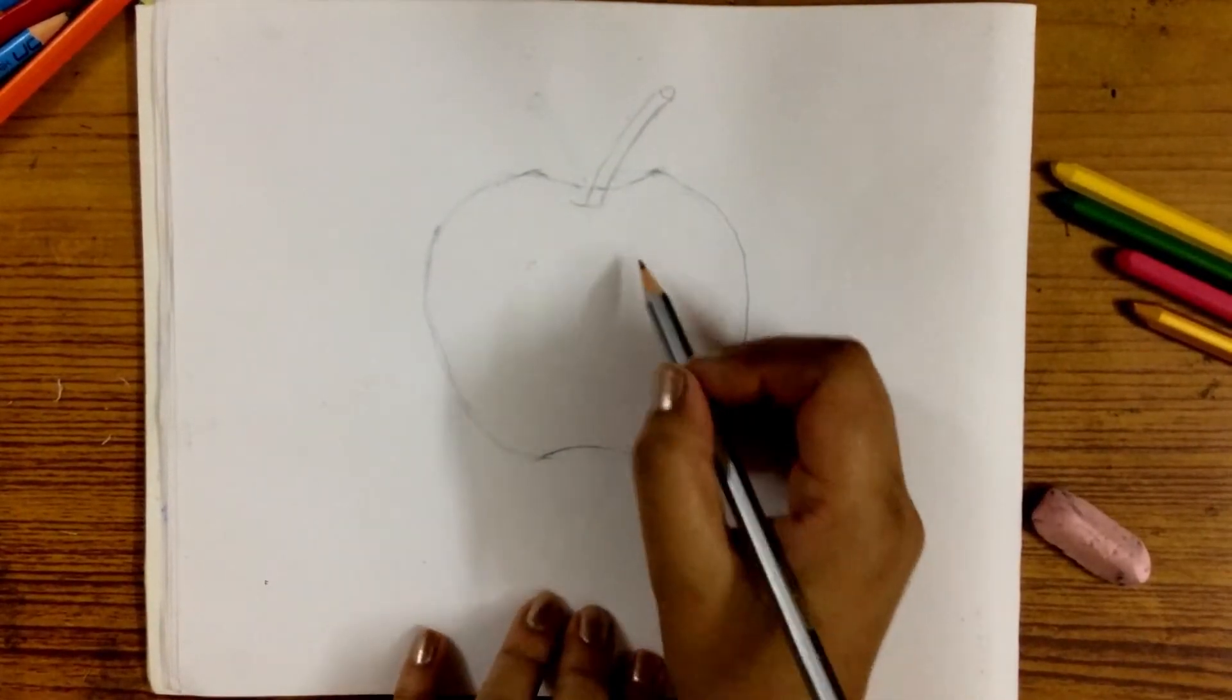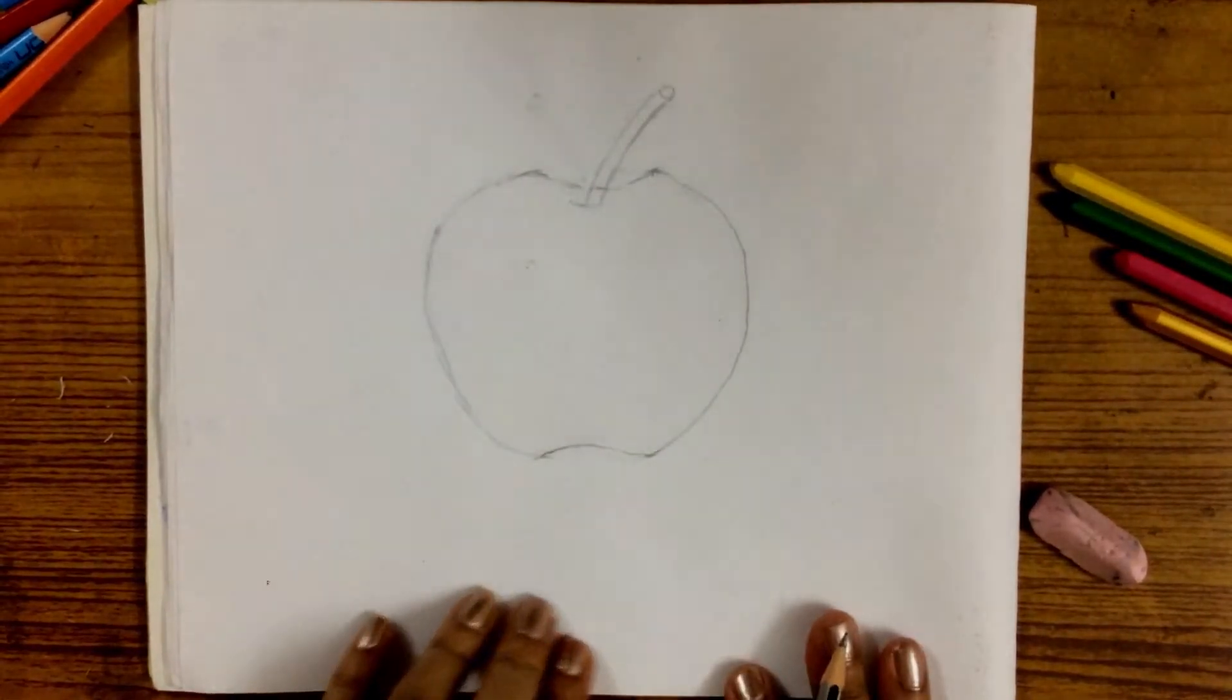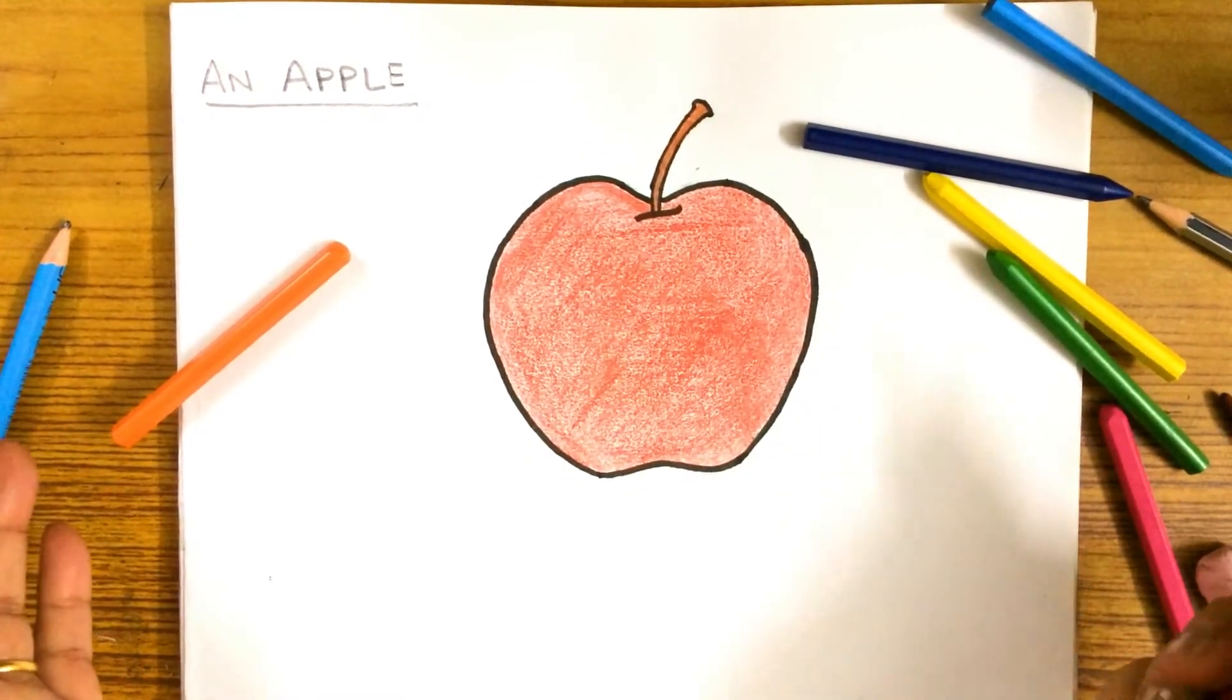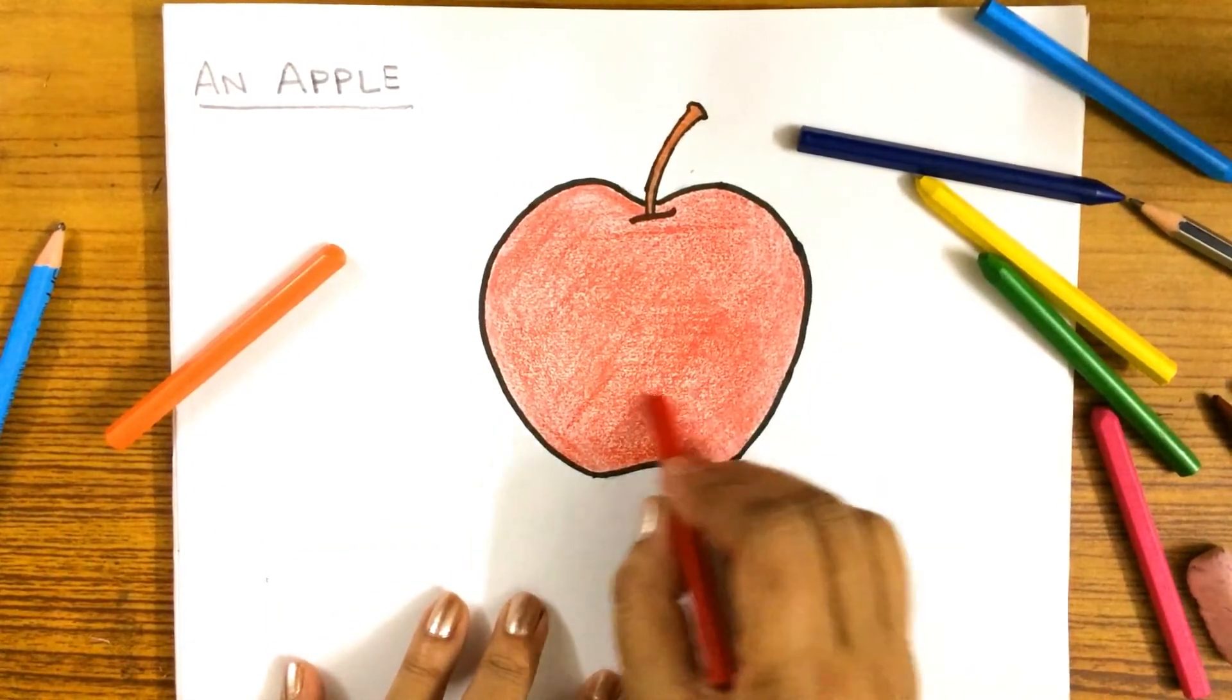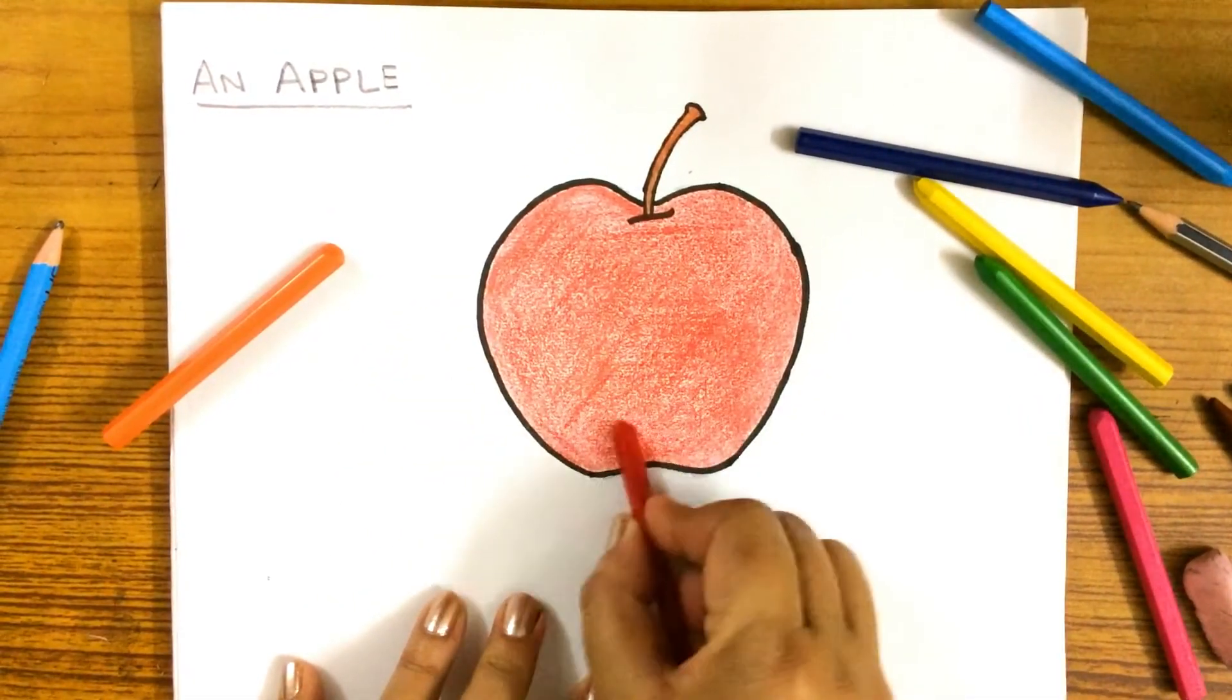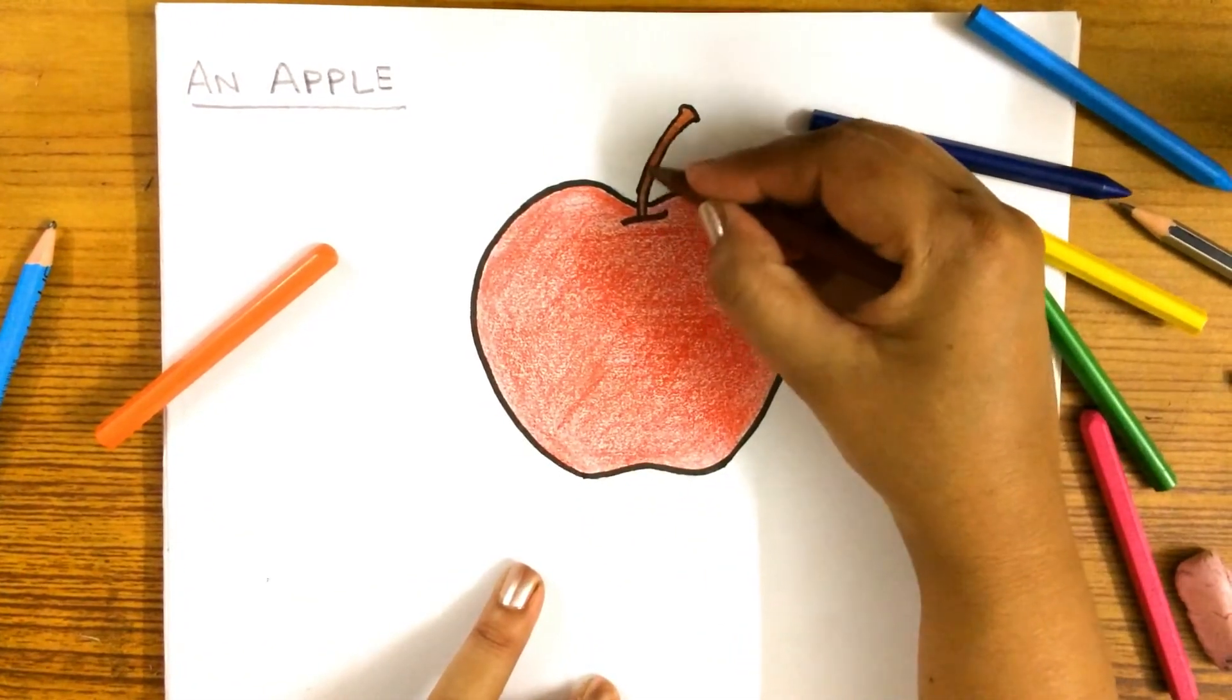Now the drawing of the apple is ready for coloring. So children, I have already colored the apple for you. You all know that an apple is red, and so I have used red color to color the apple. And for its stem, I have used brown color.